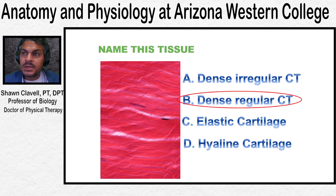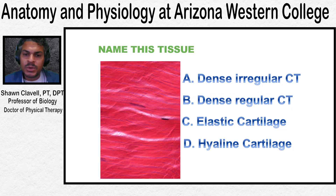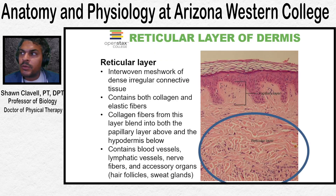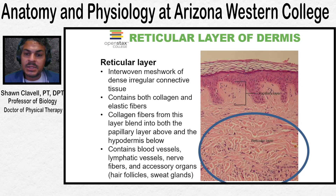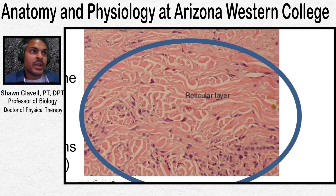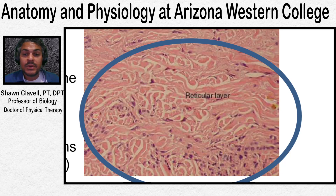As opposed to dense regular connective tissue, what does dense irregular connective tissue look like? Here's a slide showing the reticular layer of the dermis, which contains dense irregular connective tissue. You can see that the collagen fibers run in a more haphazard fashion rather than in parallel.